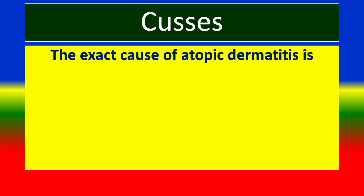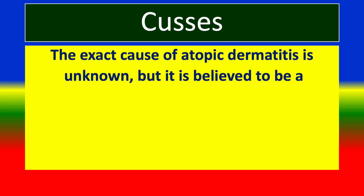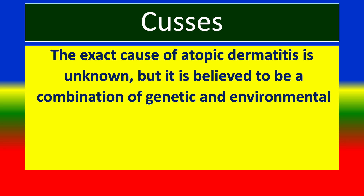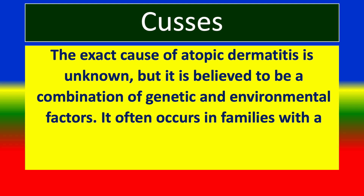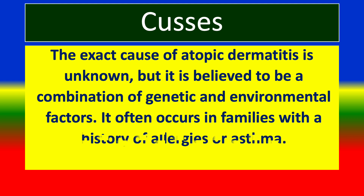Causes. The exact cause of atopic dermatitis is unknown, but it is believed to be a combination of genetic and environmental factors. It often occurs in families with a history of allergies or asthma.